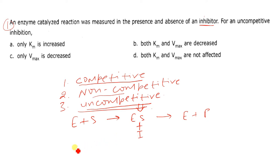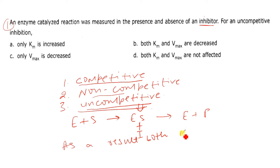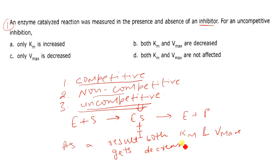As a result of uncompetitive inhibition, both Km (Michaelis constant) and Vmax (maximal velocity) get decreased.